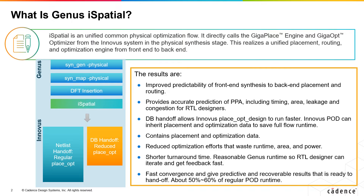It improves the quality of results, and clock gates and skewed macros are now considered in synthesis, which further helps in improving the predictability and QoR. The iSpatial Flow also introduces physical restructuring and supports multiple features including MMMC, ECF, useful skew, MBIT, ILM, and more.